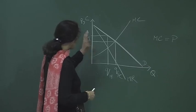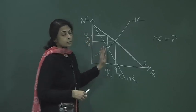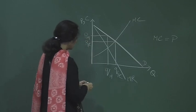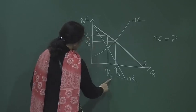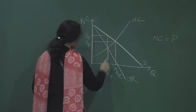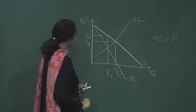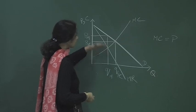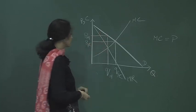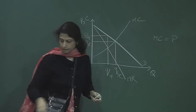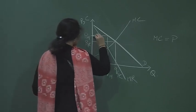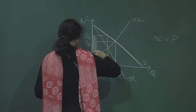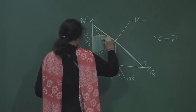Looking at the outcome for the monopolist — what is the producer surplus that the monopolist is getting? He is charging a price P_m, so he is getting a revenue of P_m multiplied by Q_m, which means this rectangle is his revenue. Out of this, here is the marginal cost, and everything that he gets above the marginal cost is his producer surplus. So his producer surplus is basically this green region.